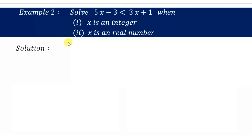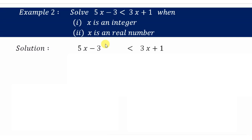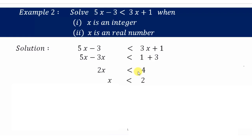Example 2: Solve 5x minus 3 is less than 3x plus 1 when x is an integer and when x is a real number. Picking the inequality: 5x minus 3 less than 3x plus 1. Shifting negative 3 to the right and 3x to the left gives 5x minus 3x less than 1 plus 3, so 2x less than 4, giving x less than 2.